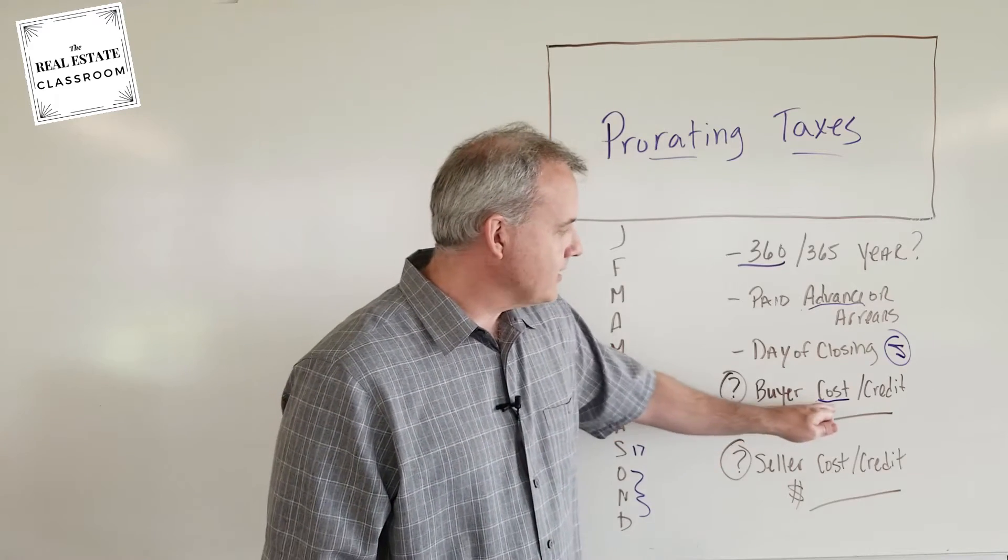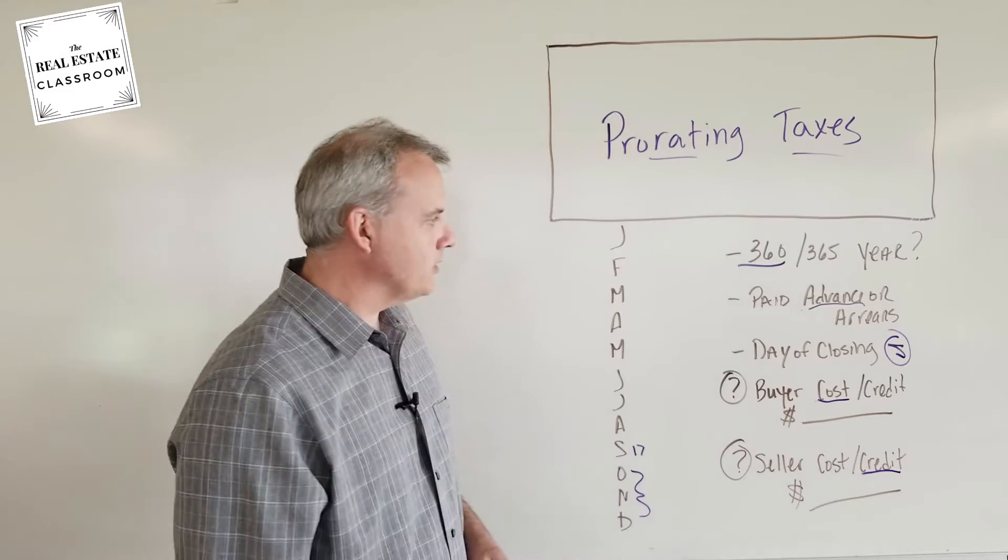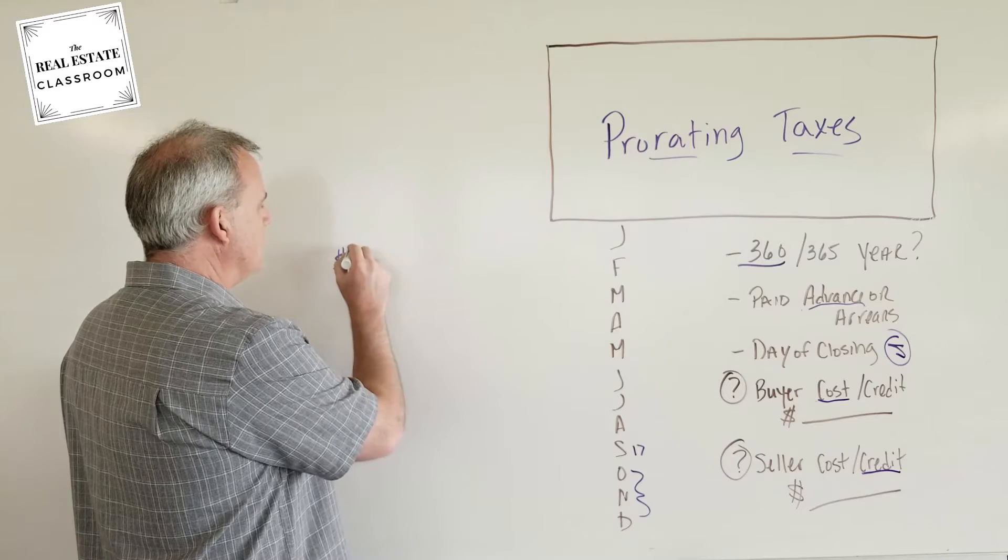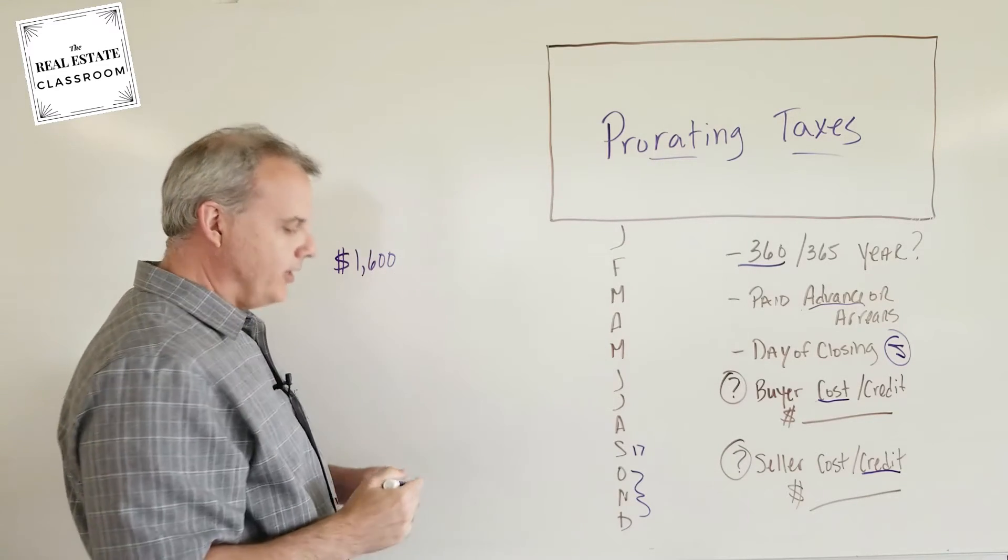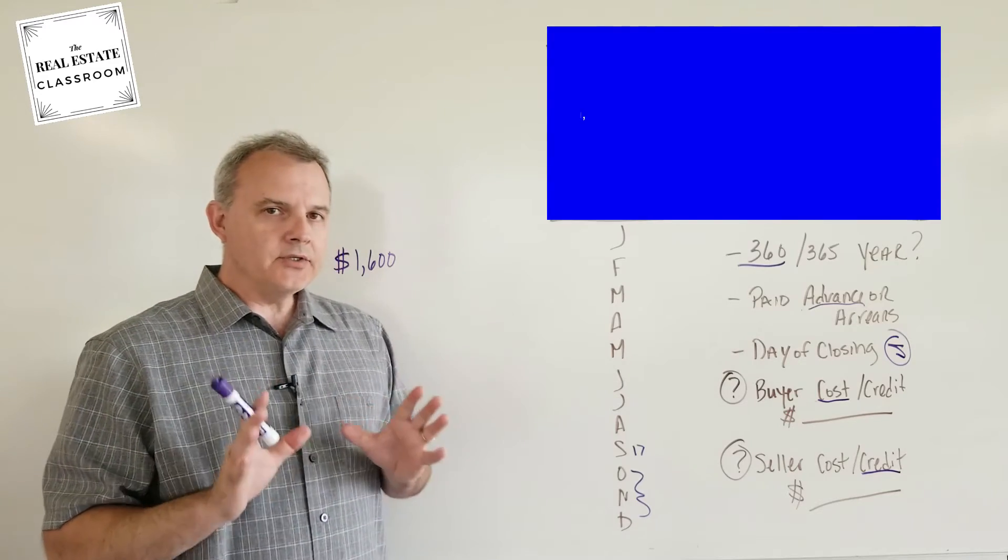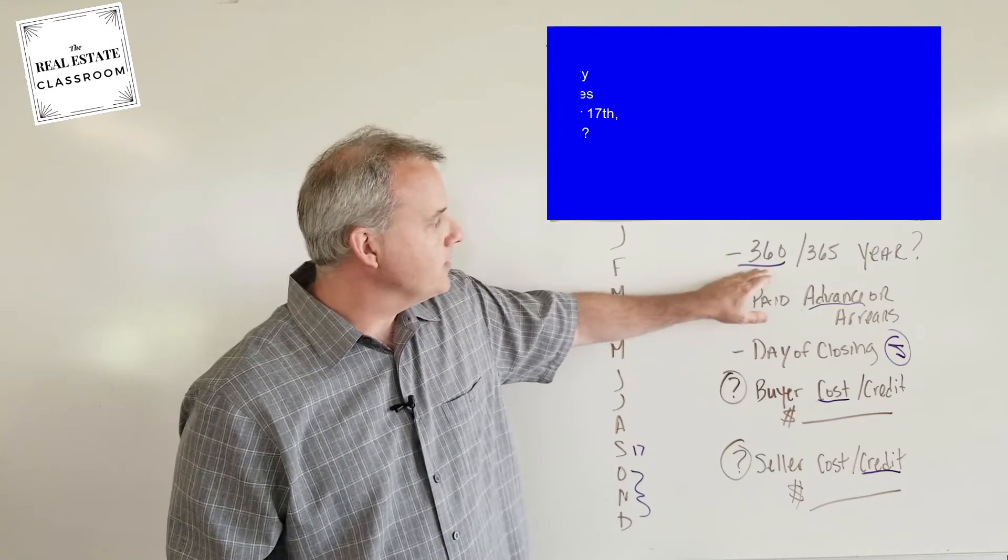for these three and a half months that were prepaid. So the buyer, it's going to be a cost, and the seller is going to get a credit at closing. We also know that annual taxes are $1,600 or $1,600 per calendar year. So that's going to be our baseline, but here's something that's a little bit different when calculating using the 360 method versus the 365.